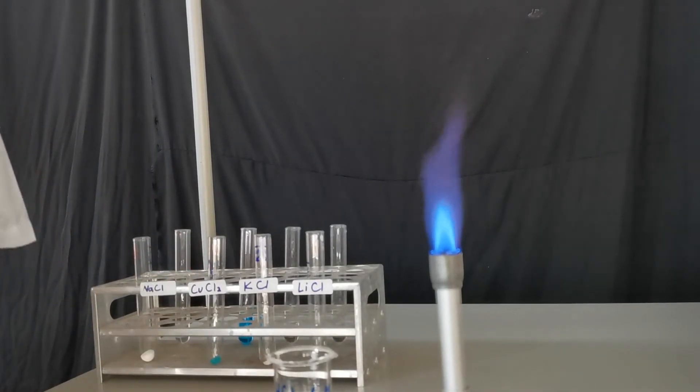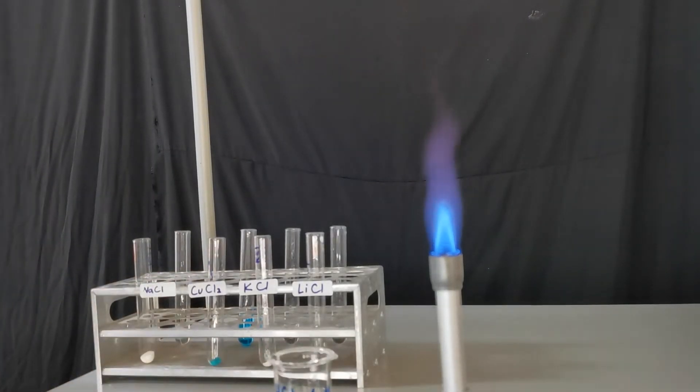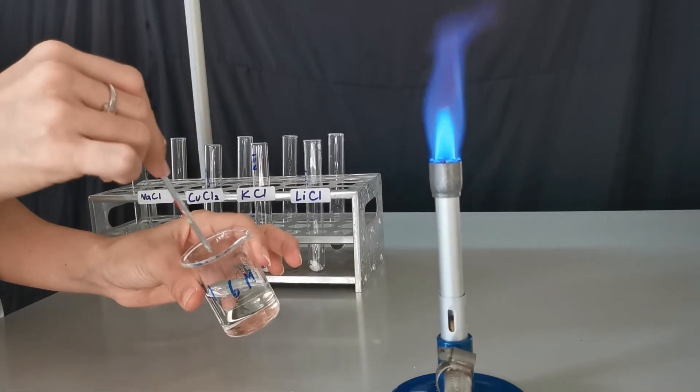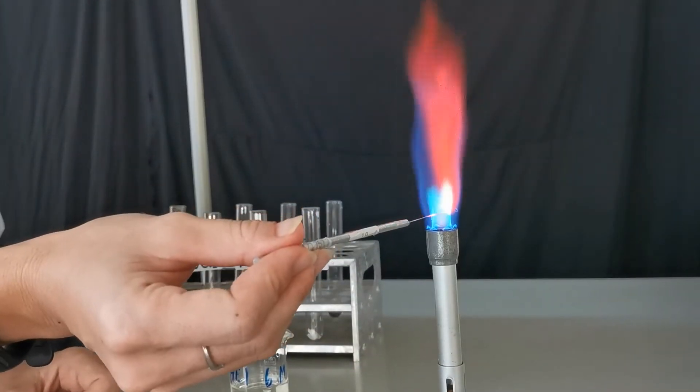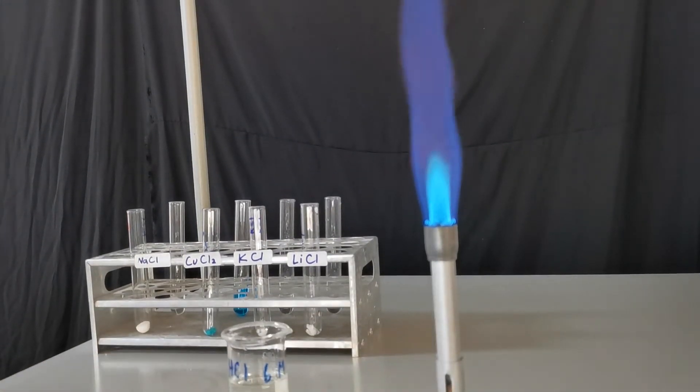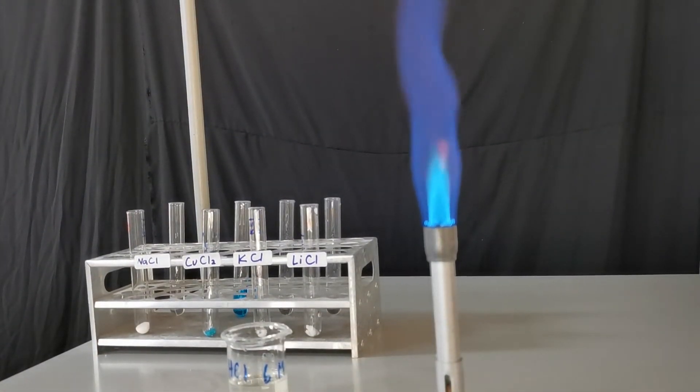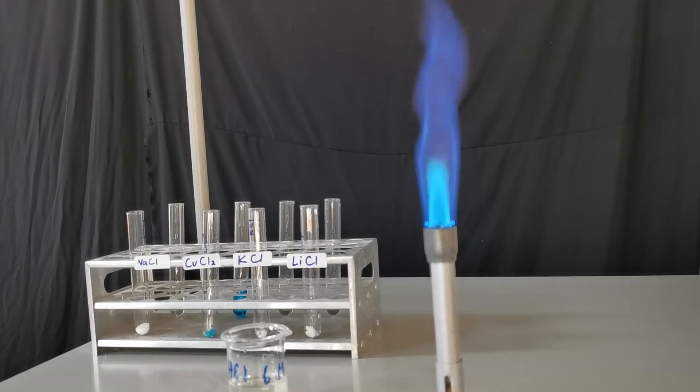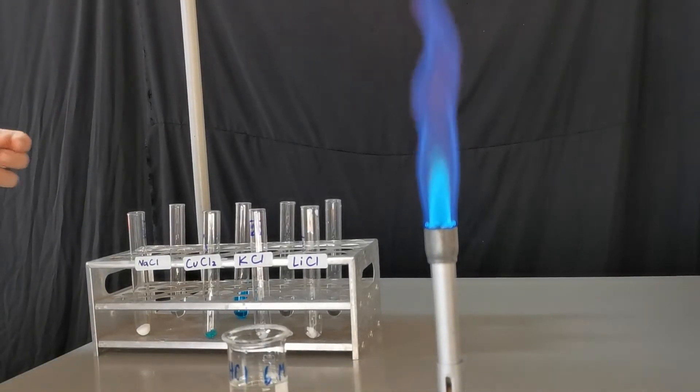Now we're going to wash the loop again. The second test that we will do is copper chloride test, so we are testing the flame color of copper ion.